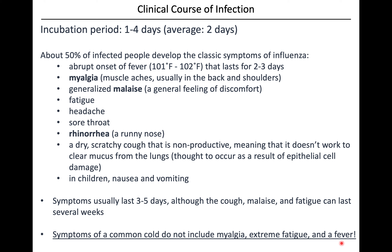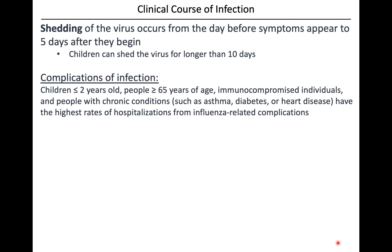Shedding of the virus - basically the host releasing virus and being infectious - can happen from the day before symptoms first appear to five days after they've started, giving about a six-day window. Children can shed for a little bit longer. With COVID, people have been found to be infectious for up to two weeks before they show any symptoms, and potentially for two weeks while symptomatic or even longer, depending on the course of their infection.